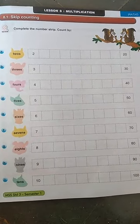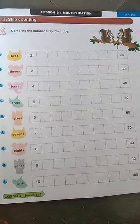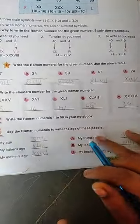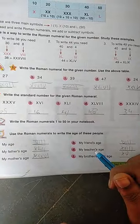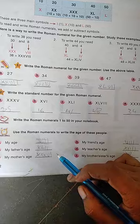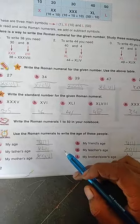In the last portion they have given quick drill sums that you have to write the age of yours, your father's, mother's, friend's age. That you just ask your friends, your mother, father and convert in terms of roman numerals.